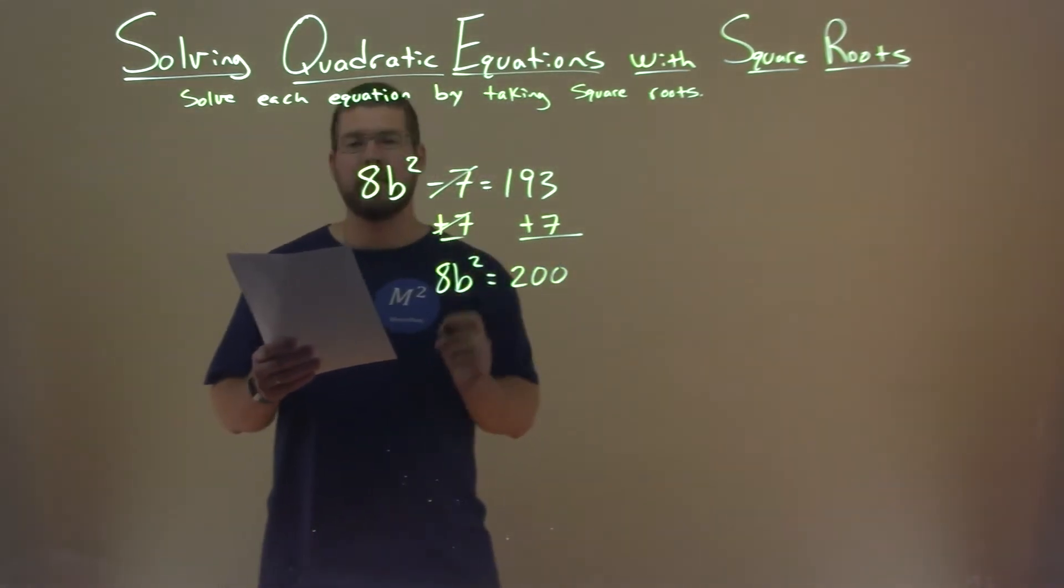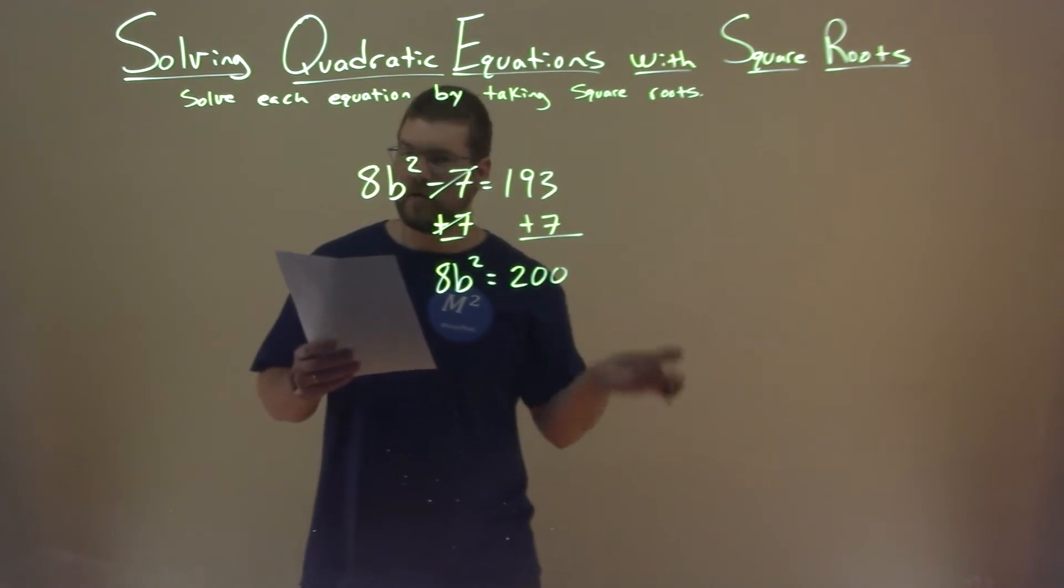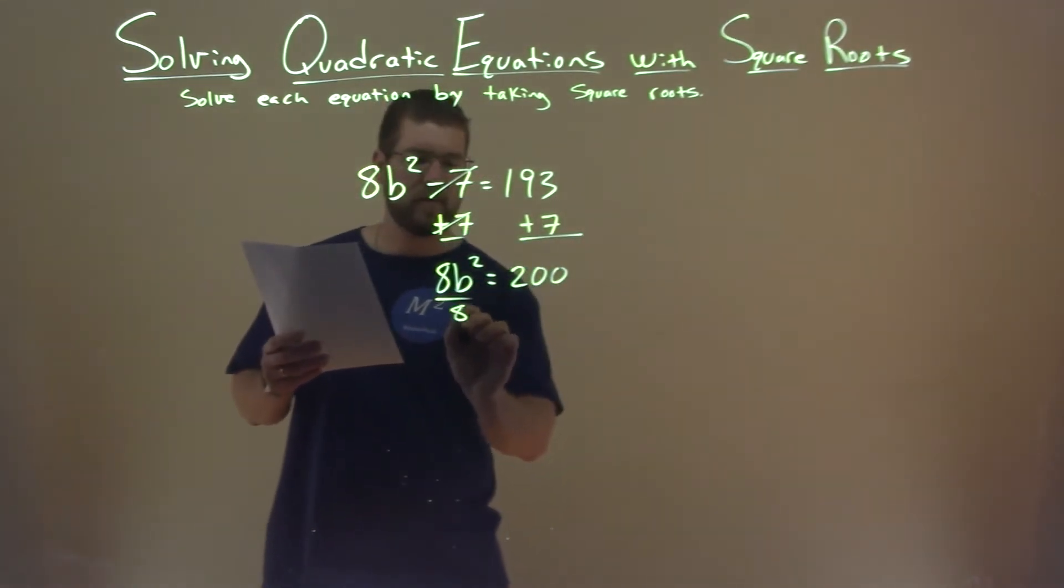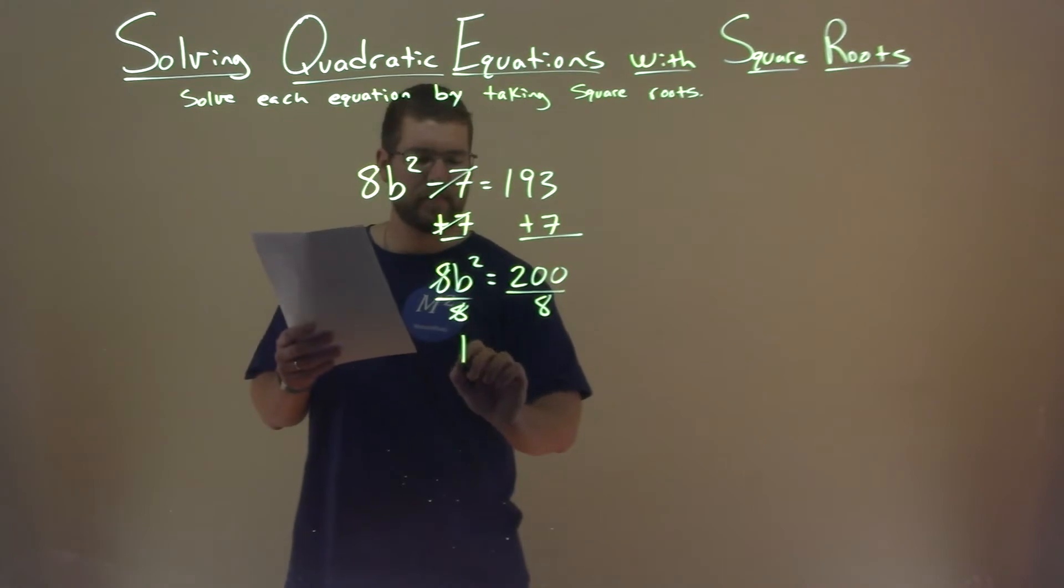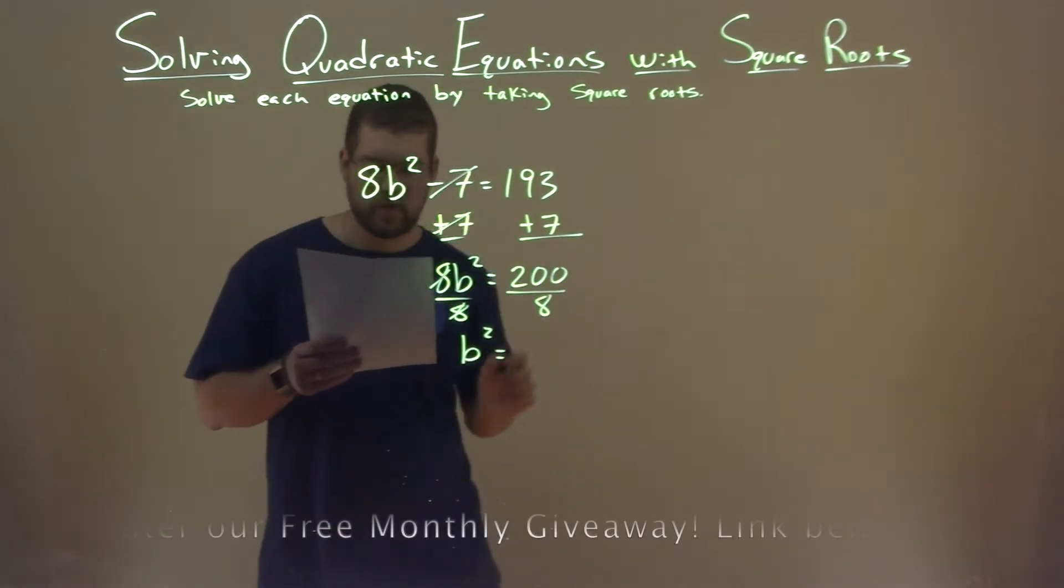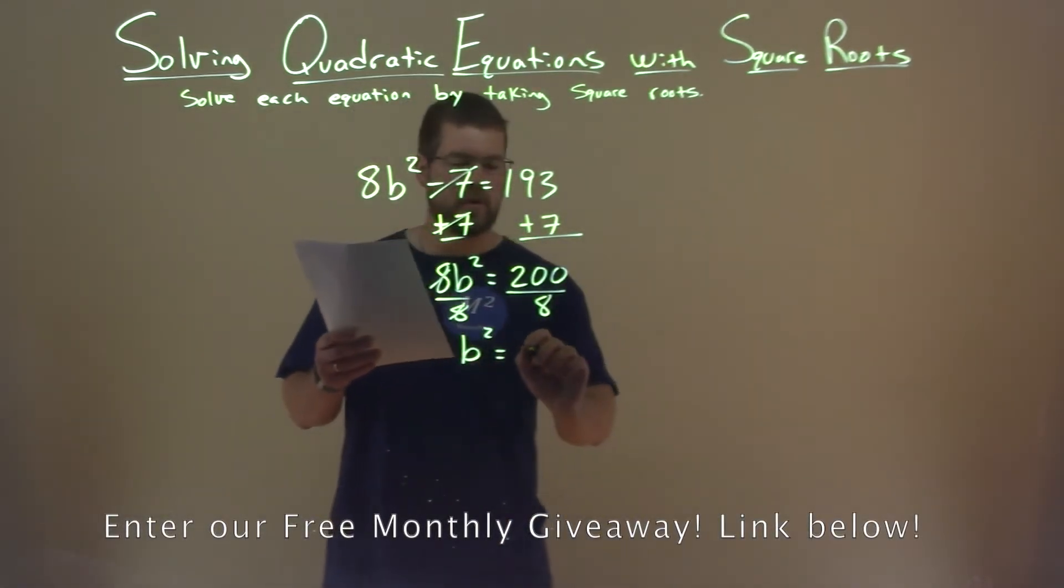So now we have 8 times b squared. Opposite of multiplication is division. Divide both sides by 8. The 8s cancel, b squared is right here, and 200 divided by 8 is 25.